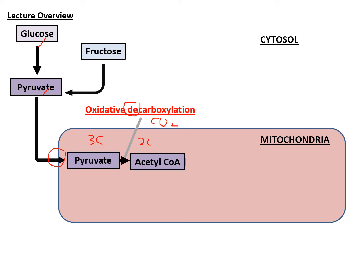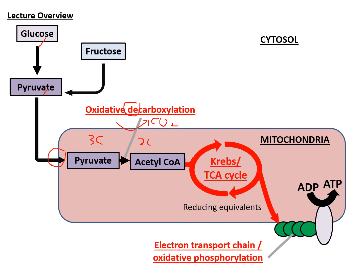This reaction of converting pyruvate into the two-carbon acetyl coenzyme A is known as oxidative decarboxylation. Decarboxylation means the removal of one carbon dioxide — this is the first point in metabolism where you get carbon dioxide production. The resulting acetyl coenzyme A can then enter the TCA cycle (tricarboxyl acid cycle) for the production of more reducing equivalents in the forms of NADH and FADH2.